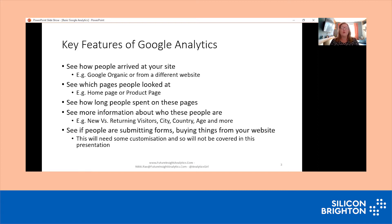Generally, we're going to want people to view two or more pages on our websites. Using Google Analytics out of the box, we can also see information about whether the visitors were new versus returning, whether they were from a specific city like Brighton, what country they were from, and perhaps things like age and other demographics — there's loads in Google Analytics to explore. We can also see if people are doing things like submitting forms and buying things from your website, which we call conversions in the industry. However, Google Analytics out of the box does not come with these features; it takes some customisation to set up, so we're not going to talk about them in this presentation.